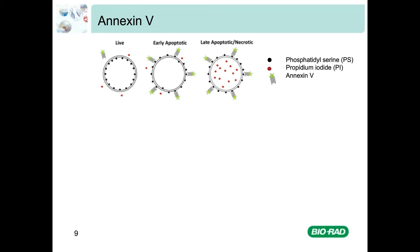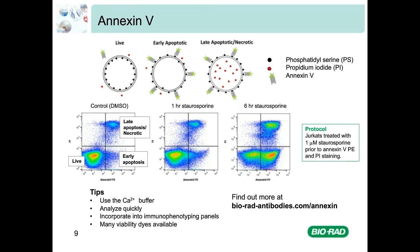In this example, Jurkat cells are treated with staurosporine — a protein kinase inhibitor that induces apoptosis by caspase-dependent and independent mechanisms — or a DMSO control. Compared to the control, there is a slight increase in cells in early apoptosis at one hour, and by six hours a large proportion of cells are in both early and late apoptosis. Some Annexin V assay-specific tips: be aware that the buffer provided contains calcium ions and any variation can affect staining. As PS flipping is reversible, stained samples should be analysed as soon as possible. Annexin V comes in various fluorophore formats, so it can be easily incorporated into your staining panel.